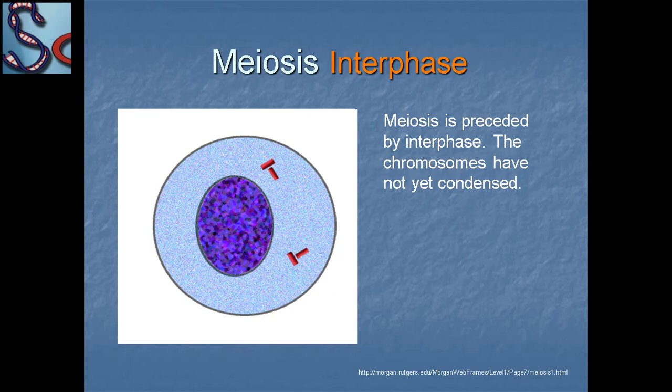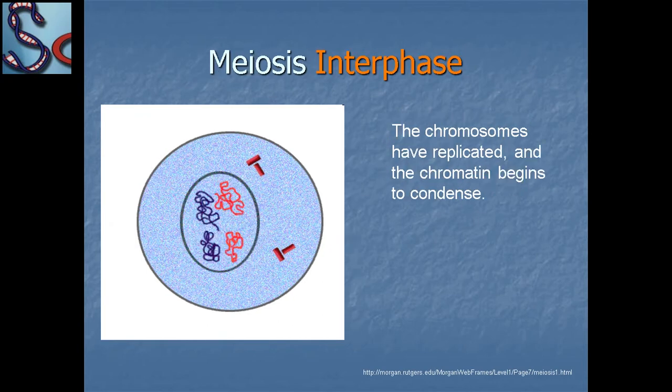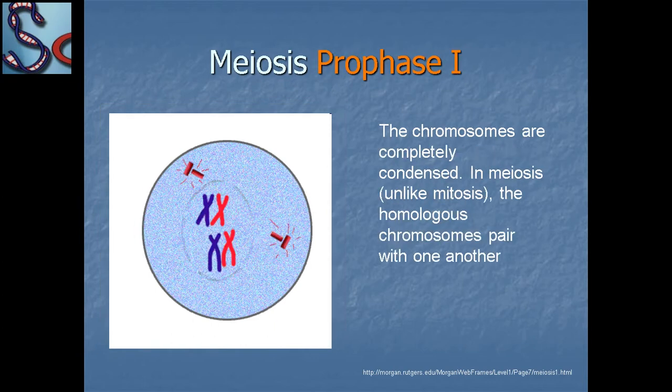In meiosis interphase, meiosis is preceded by interphase. The chromosomes have not yet condensed. The chromosomes then replicate and the chromatin begins to condense. After that, prophase one starts.